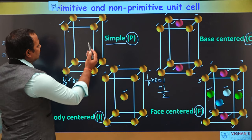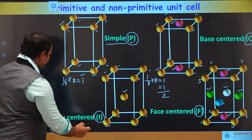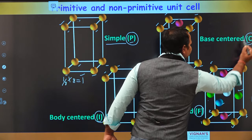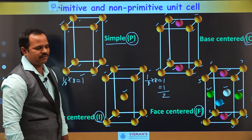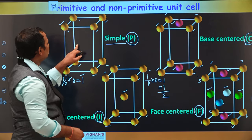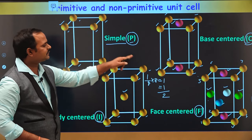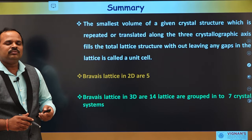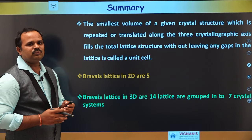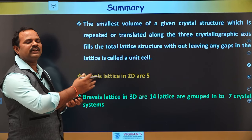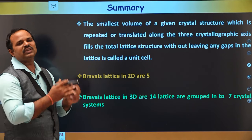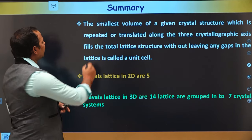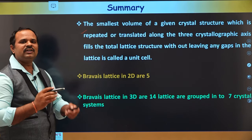In summary: simple is represented by P, body-center by I, base-center by C, and face-center by F. Only the simple lattice is a primitive unit cell; the rest are non-primitive. The unit cell is the smallest volume of the crystal, and repeating it along the x, y, z axes gives the total crystal structure. The properties of the unit cell and the lattice are similar, and the unit cell is the building block of the crystal. Thank you.